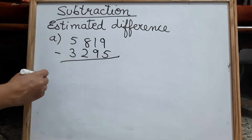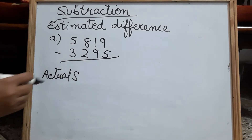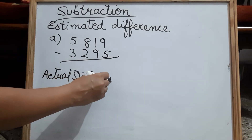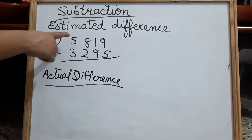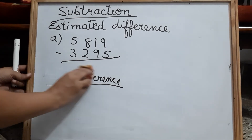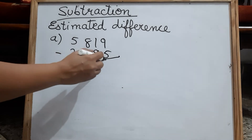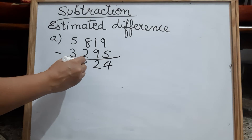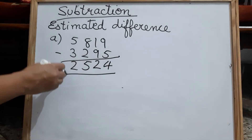When we subtract this, this is called the actual difference. And then we have to estimate these numbers and find the estimated difference. So what is the actual difference? Yes, this is the actual difference.